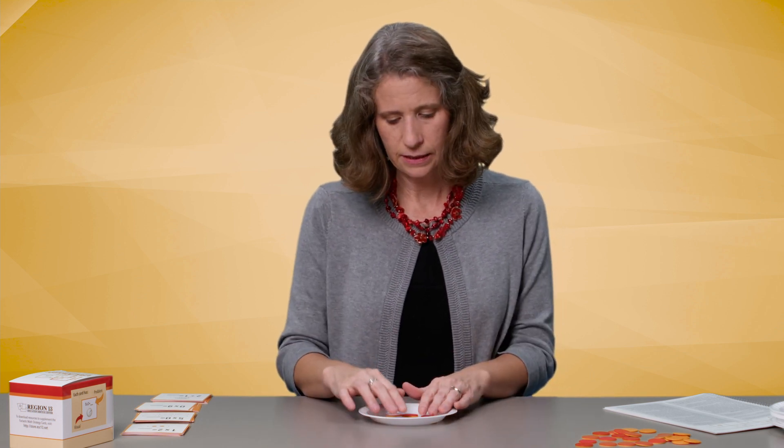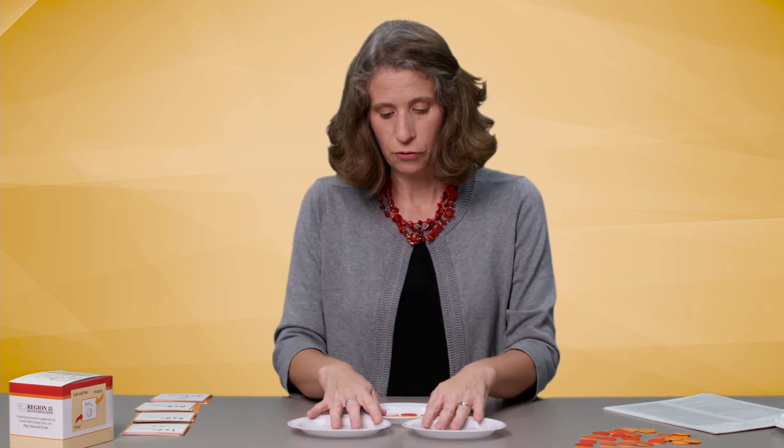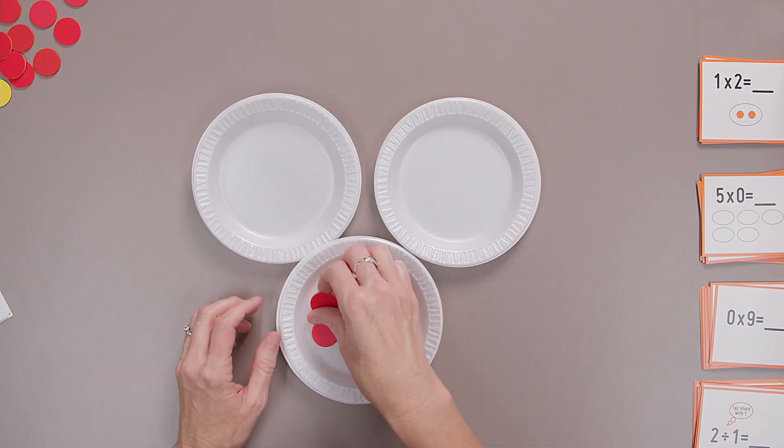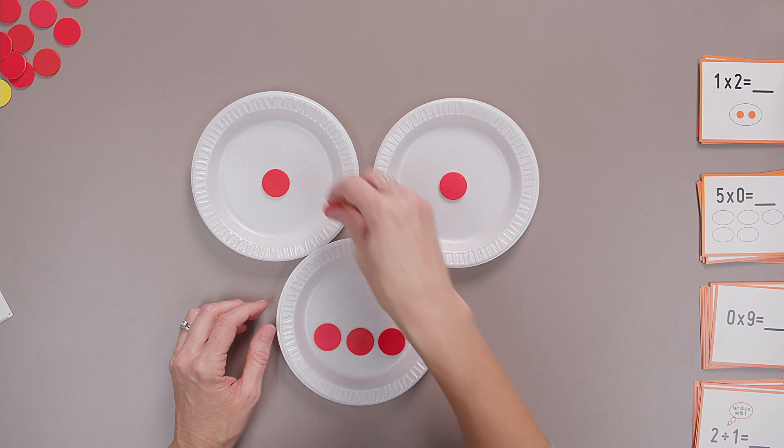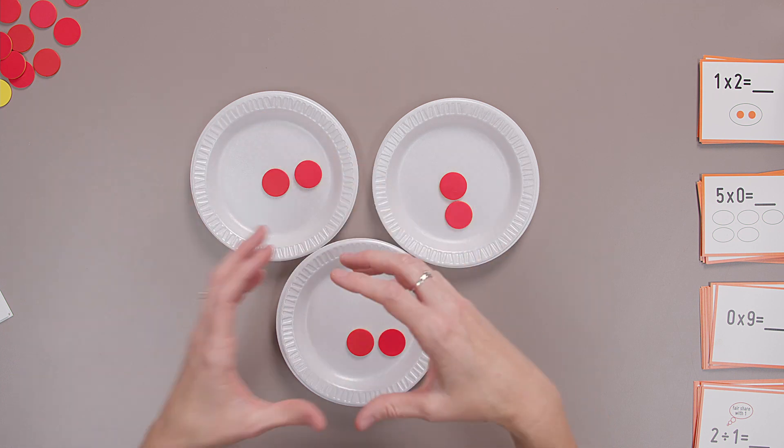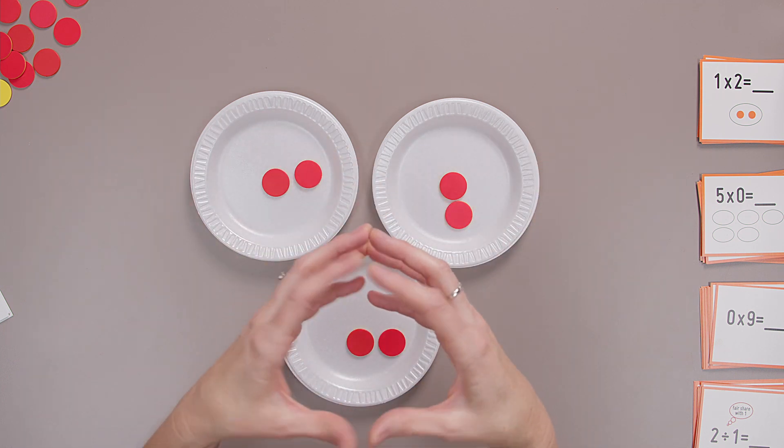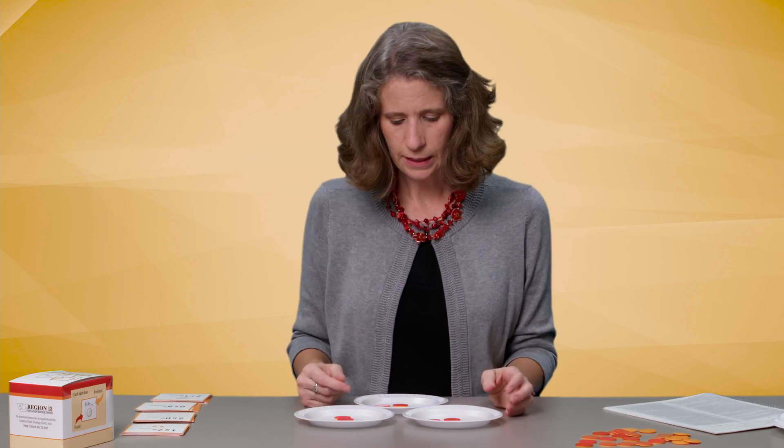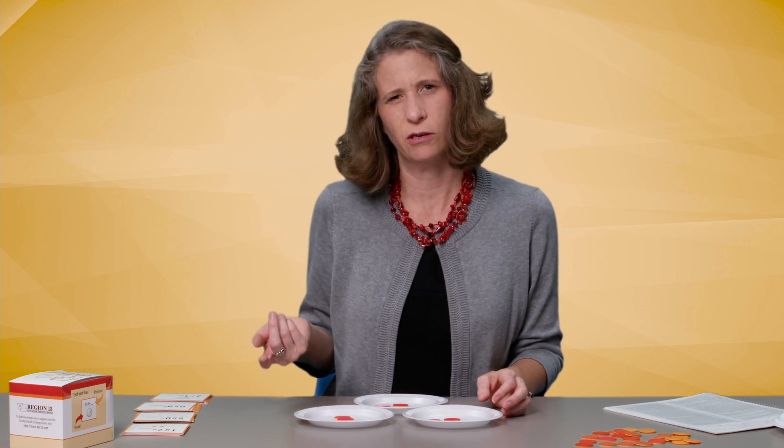When division comes around, division is the fair share. If I have six and I'm going to divide by three, I have three friends. I fair share, I give everyone the same amount. So division is fair share of the same amount. Multiplication is multiplying, having those equal groups of the same amount. Let's think about how this relates to our ones and zeros now.